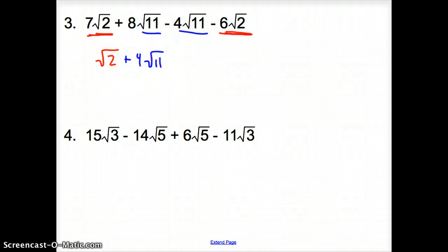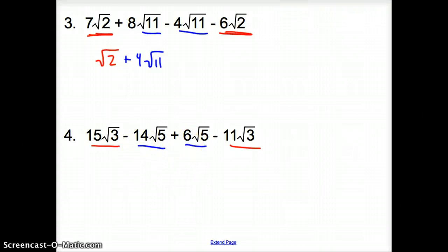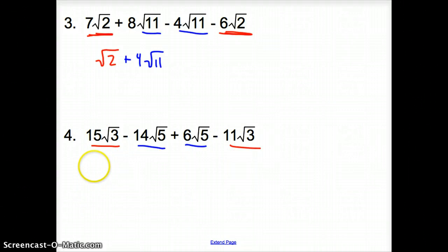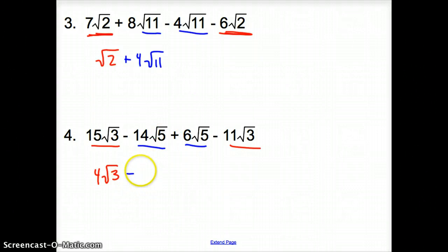Moving on to number 4. Do we have any of the same radicals? Yes, we have a square root of 3 and a square root of 3, and in the middle we have square roots of 5 and square roots of 5. Starting with the square root of 3: positive 15 minus 11 gives us 4 square root of 3. Then for the blue terms, pay attention to the signs: negative 14 plus 6 gives us minus 8 square root of 5.